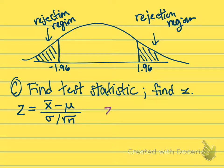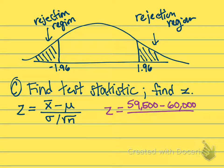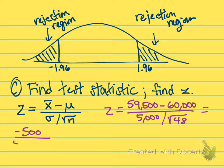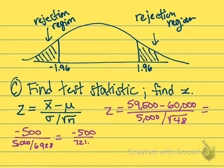Plugging in, we have Z equals: our sample mean was 59,500 and our sample size was 48. The tire manufacturer says they should all get 60,000. We divide by the standard deviation of 5,000 over the square root of 48. In our numerator we get negative 500, and in our denominator we have 5,000 divided by 6.928, which gives us 721.71. So we find a Z value of negative 0.69.